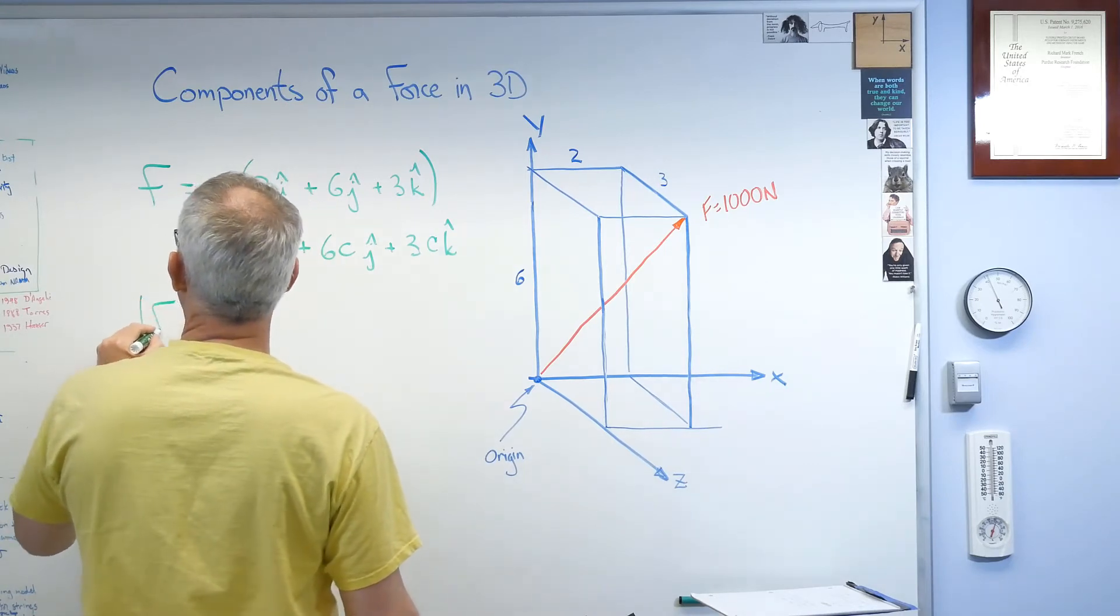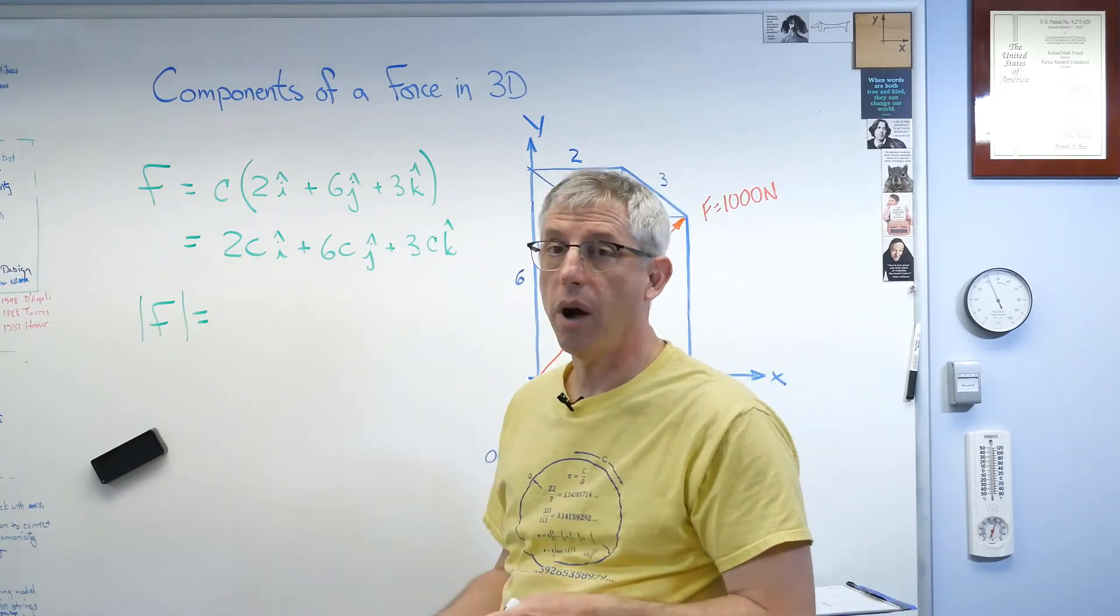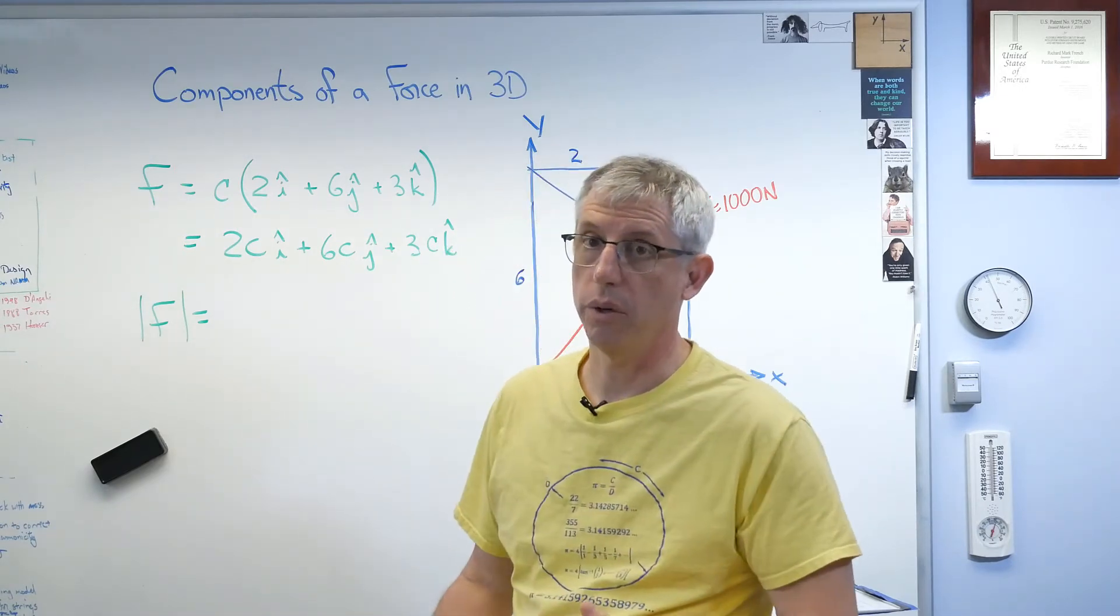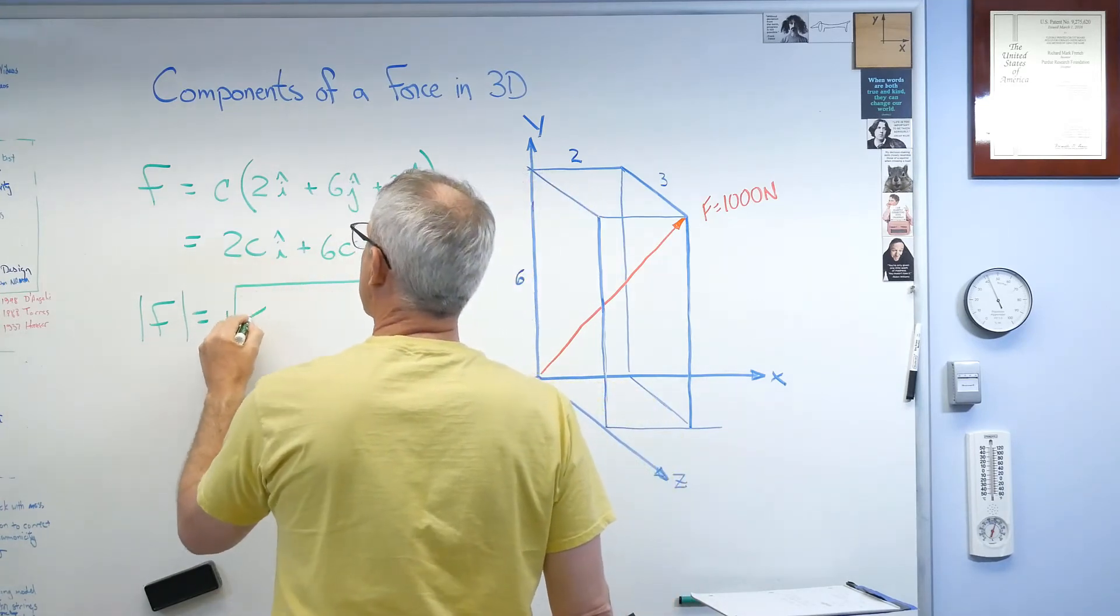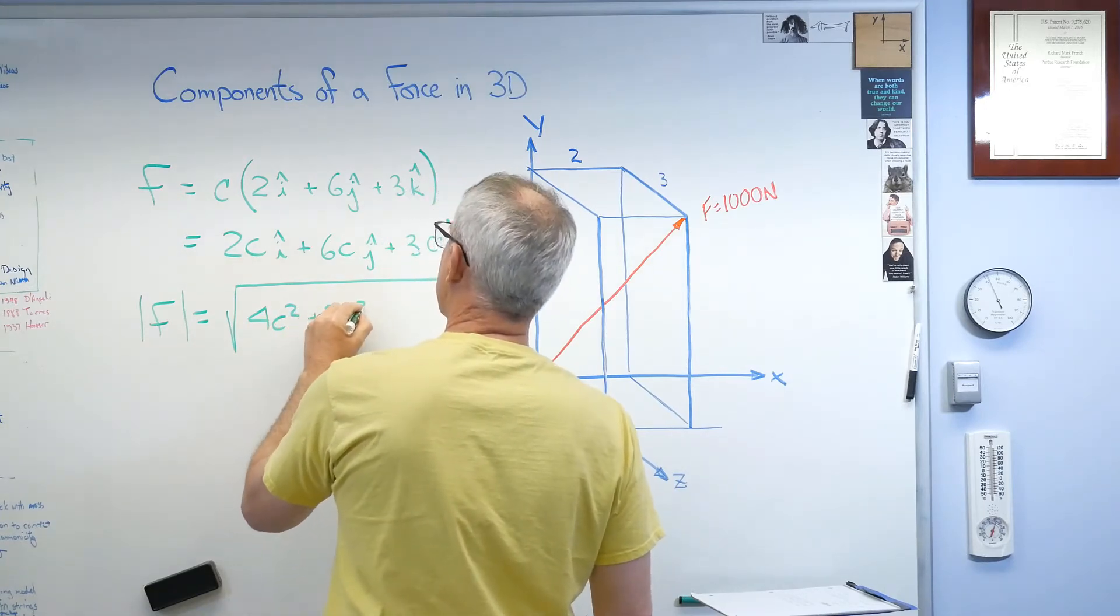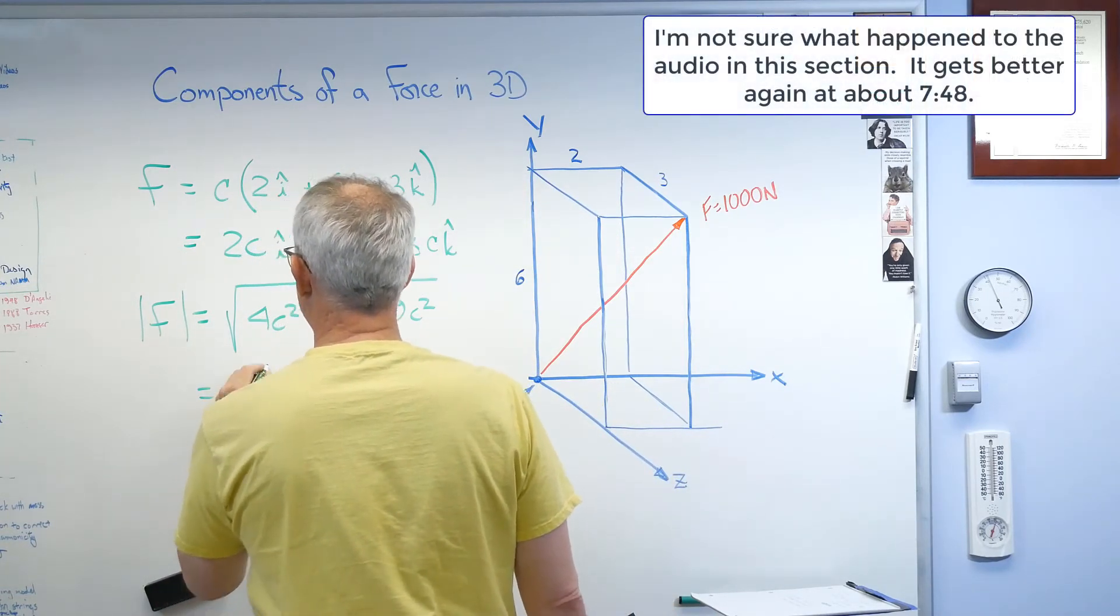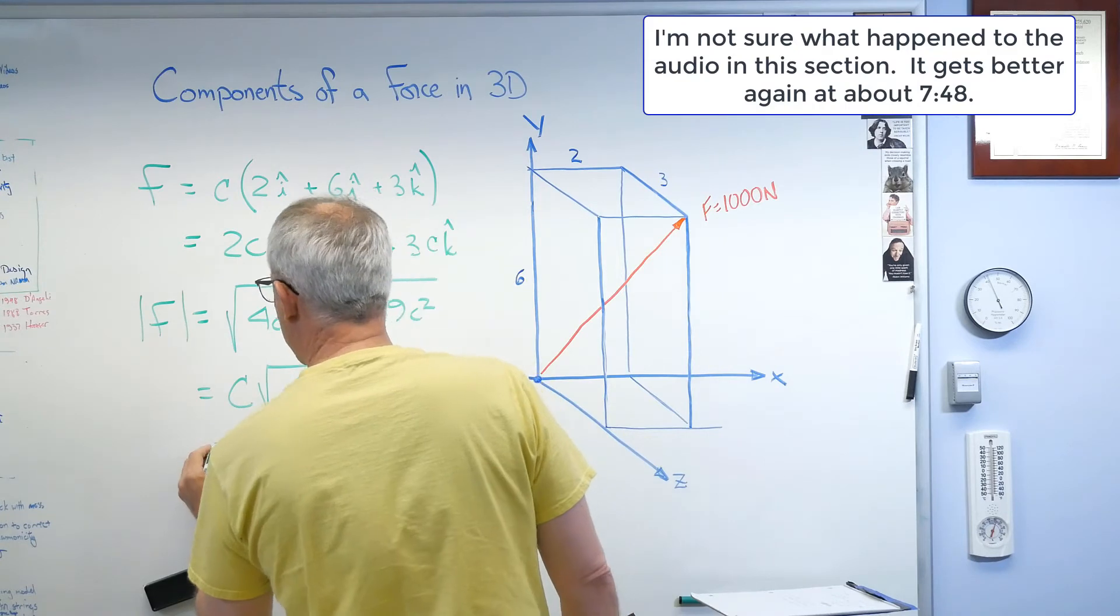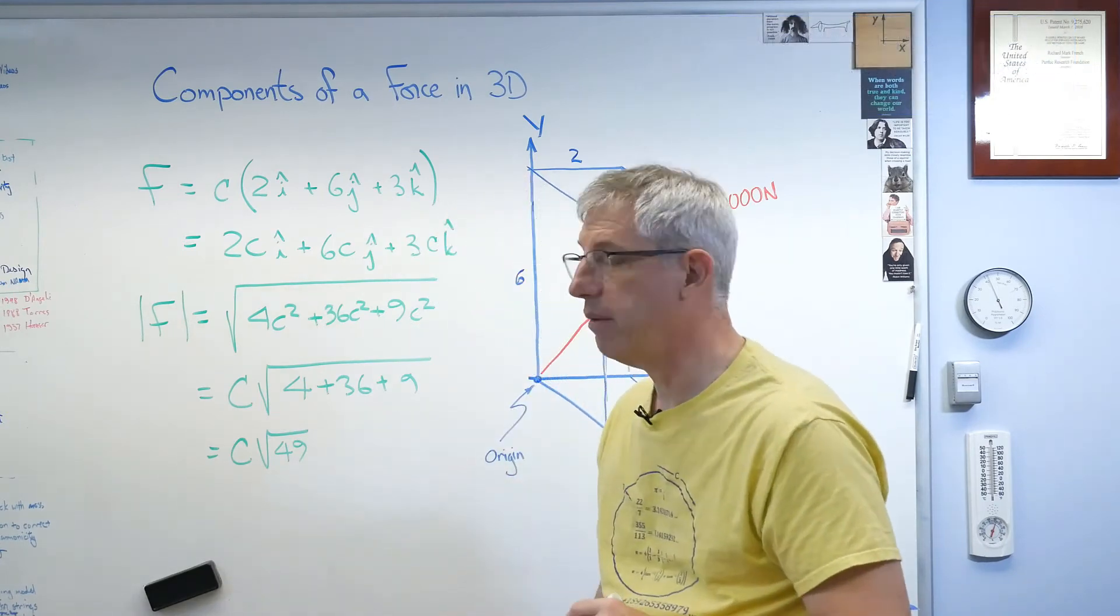So let's see. The magnitude of a vector is, we figured that out using the Pythagorean theorem. Now, we're usually taught the Pythagorean theorem in two dimensions, but it works in any dimension, any number of dimensions. It certainly works in three dimensions. So let's do this. That's going to be 4c squared plus 36c squared plus 9c squared. And that's just bring the c back out. 4 plus 36 plus 9. Looks like that's c times the square root of 49.